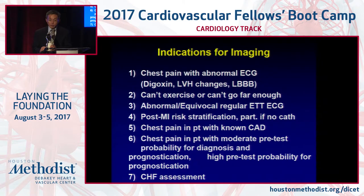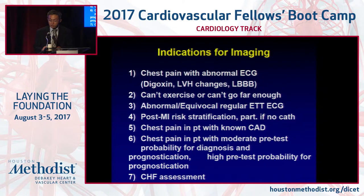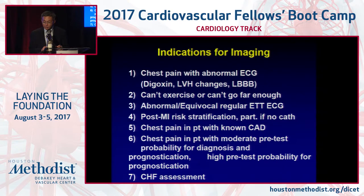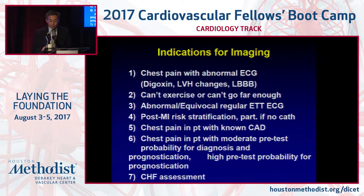What are the indications for imaging when you suspect coronary disease? Obviously chest pain, especially with abnormal ECG — ST changes due to LVH, left bundle branch block, patients who cannot exercise, or women with equivocal ECG. Imaging here refers also to stress echo, obviously. But I think more and more the indication will focus on patients with known coronary disease, because other imaging modalities available may actually be better for determining coronary disease.